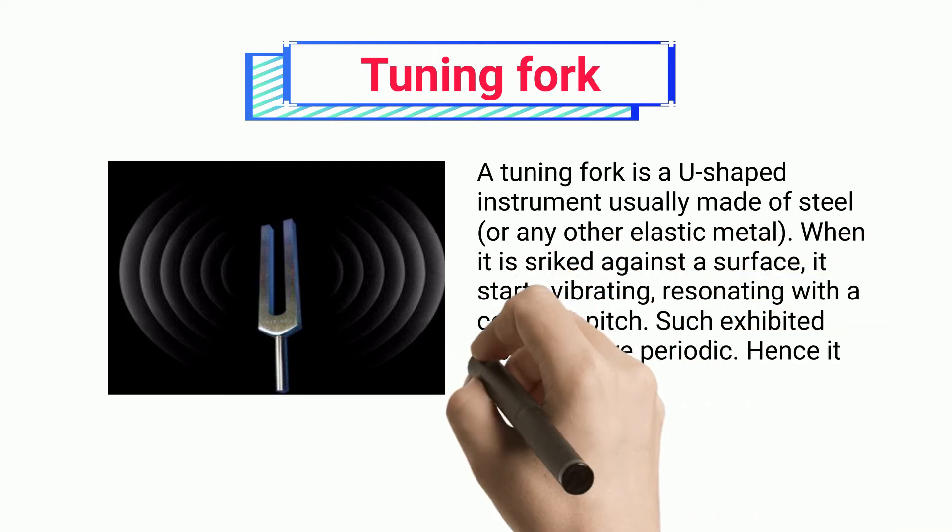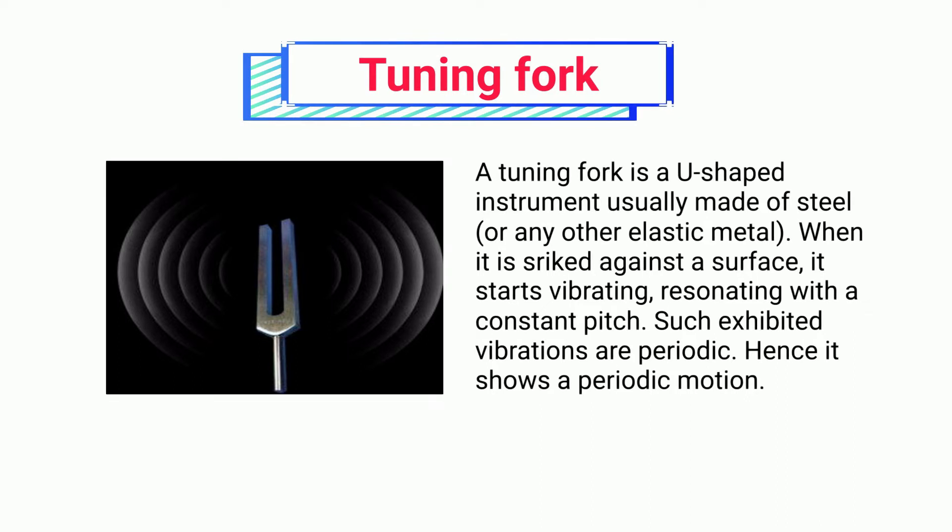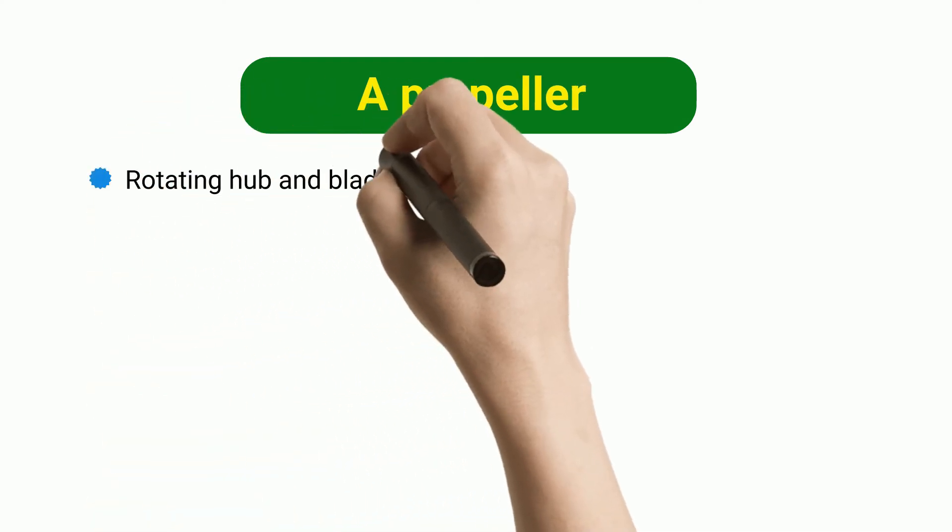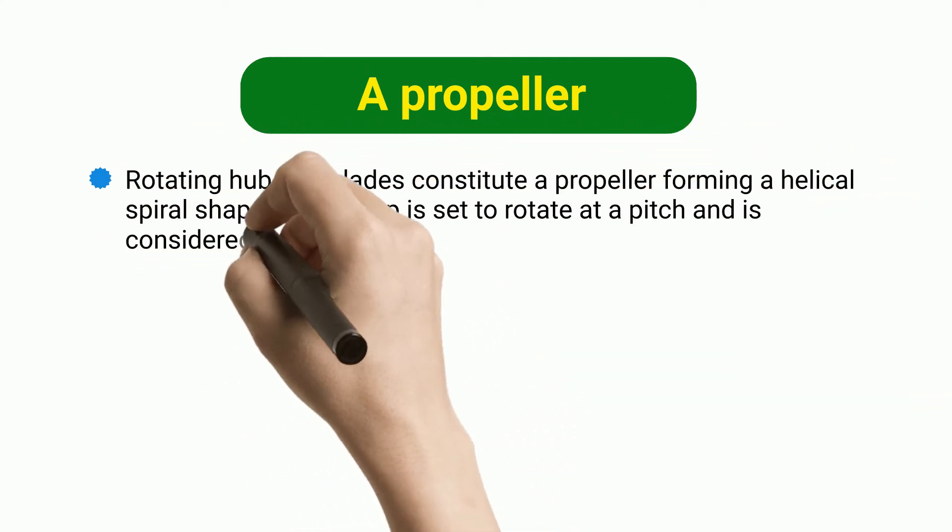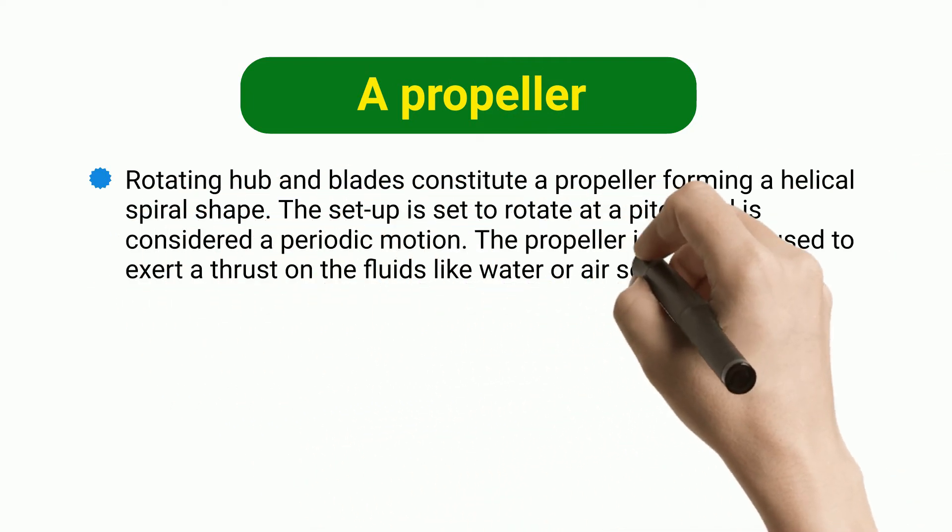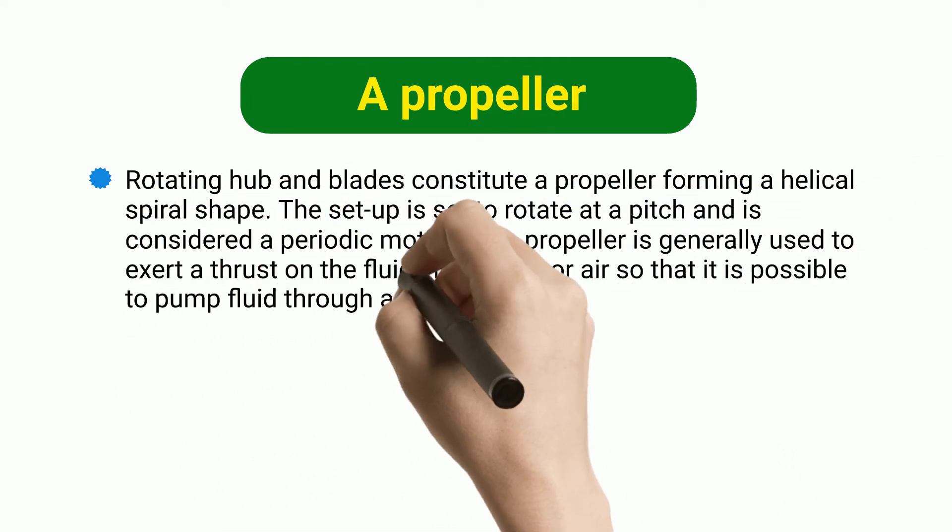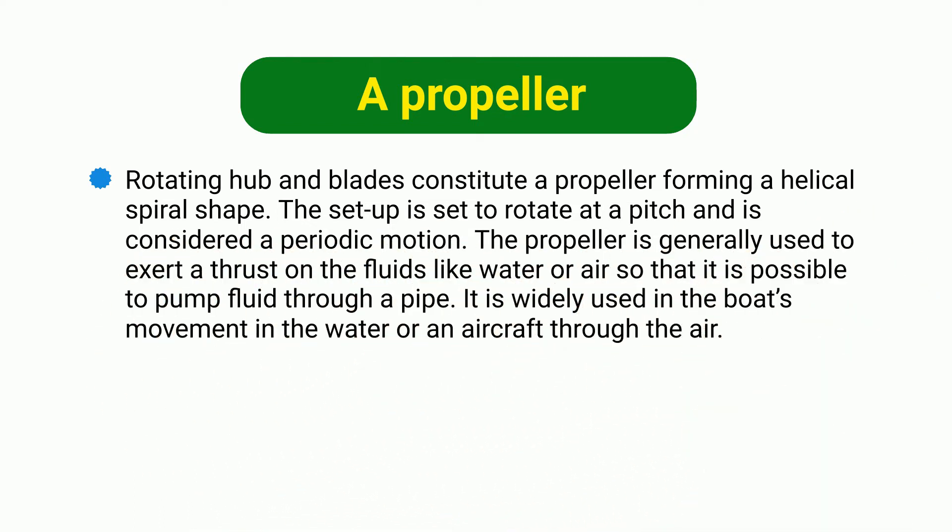A propeller: Rotating hub and blades constitute a propeller forming a helical spiral shape. The setup is set to rotate at a pitch and is considered a periodic motion. The propeller is generally used to exert a thrust on fluids like water or air so that it is possible to pump fluid through a pipe. It is widely used in boat movement in the water or aircraft through the air.